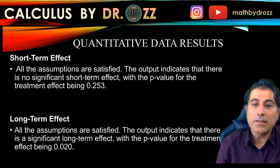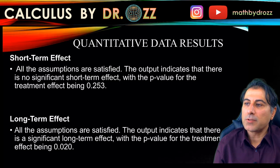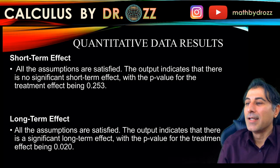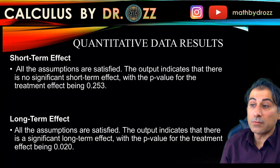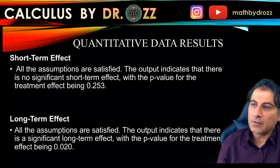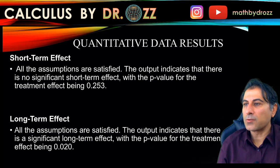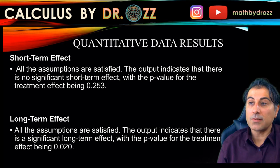The output indicates there is no significant short-term effect — the p-value for the treatment effect was 0.25. However, the long-term effect was huge. All assumptions were satisfied, and there is a significant long-term effect with a p-value of 0.02. Based on Luke's interpretation, the long-term effect was very substantial. So if students watch those videos in time, with step-by-step explanations of certain problems, their success rate gets higher and higher.